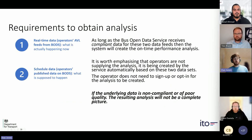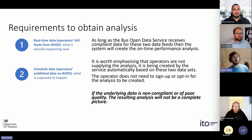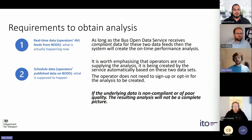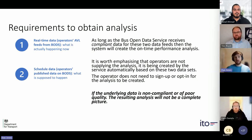Once we've matched real-time and schedule data together, we can see the differences between what actually happened and what was supposed to happen. Finally, what we call the network topology - essentially all of the stops and stations - we take care of that behind the scenes. It's helpful if you provide shapes data within your scheduled data, but the relationship between stops is handled by ABOD itself. The operators are not supplying the analysis; it's being created by the service automatically.